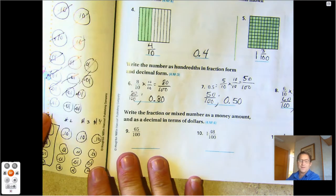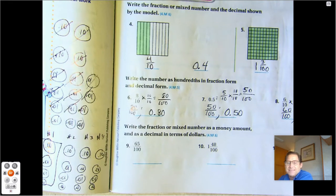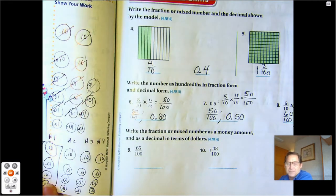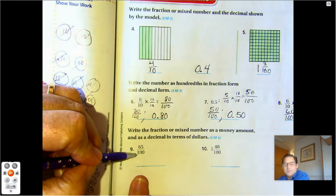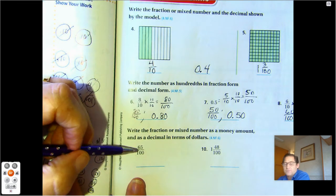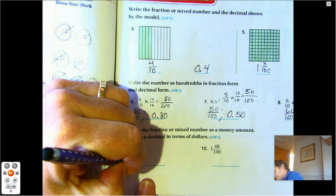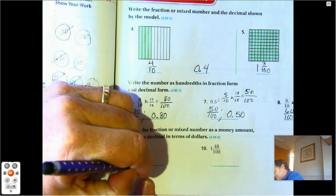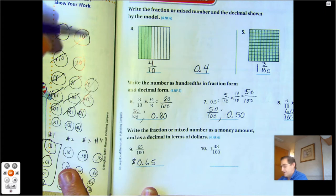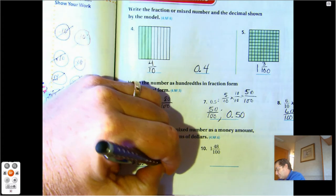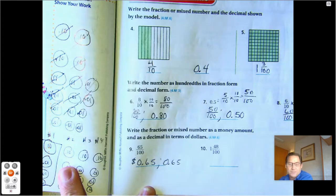Number nine, write the fraction or mixed number as a money amount and as a decimal in terms of dollars. So sixty-five hundredths, we don't have one dollar, we have less than a dollar. So it would be sixty-five cents and as a decimal, it's written the same way, just no dollar sign.